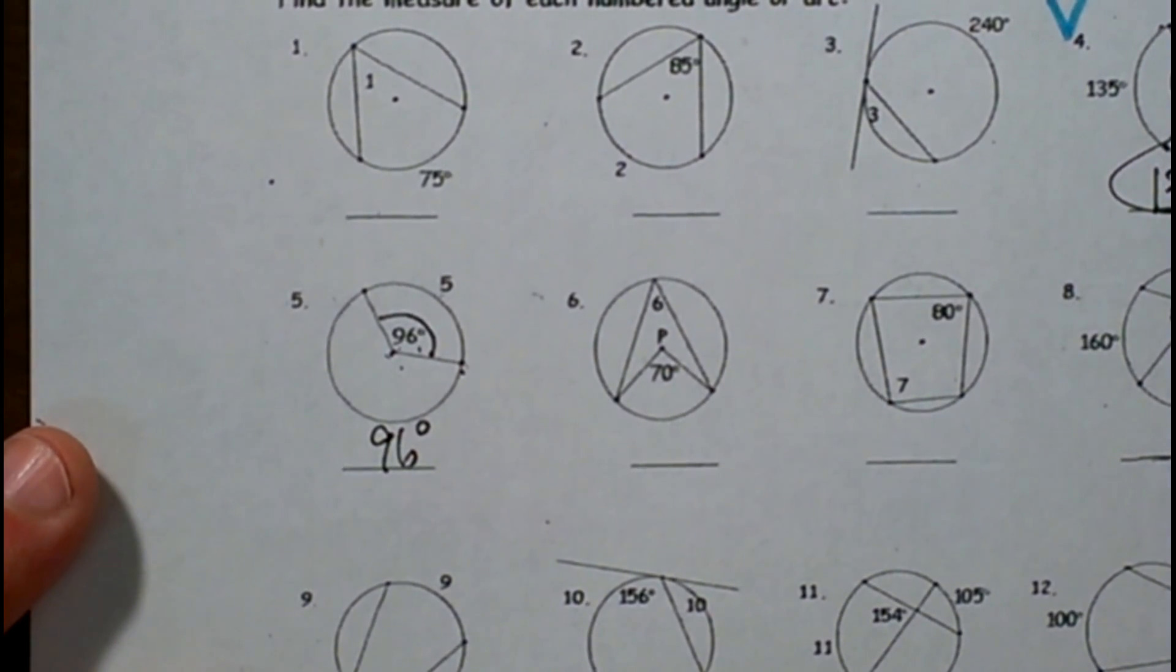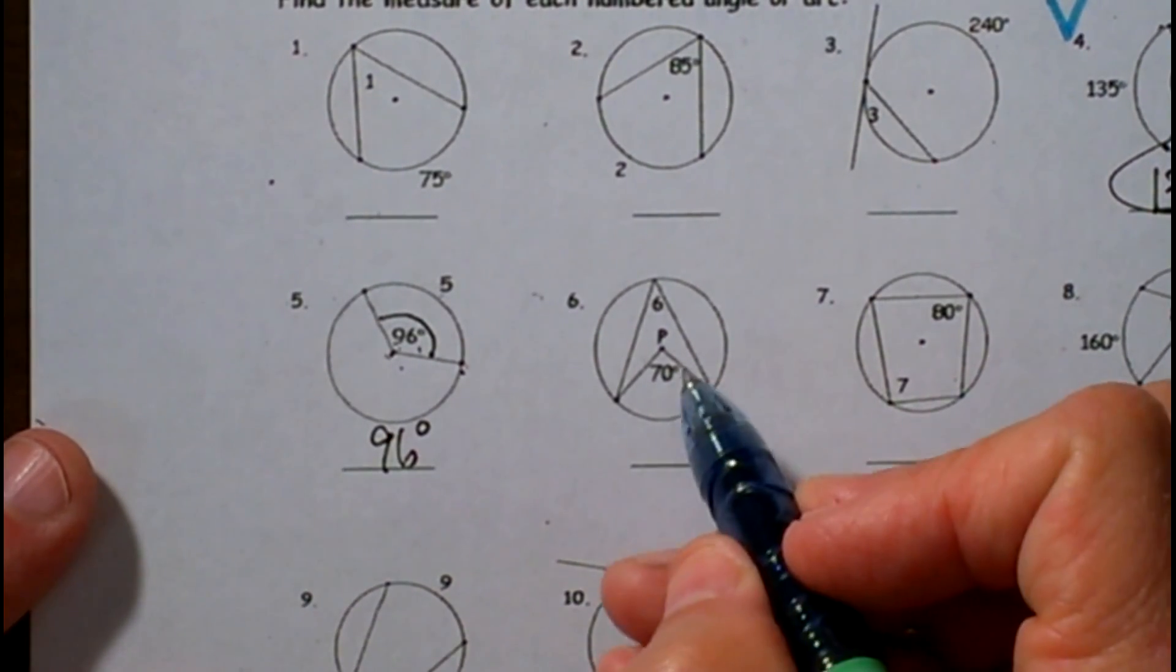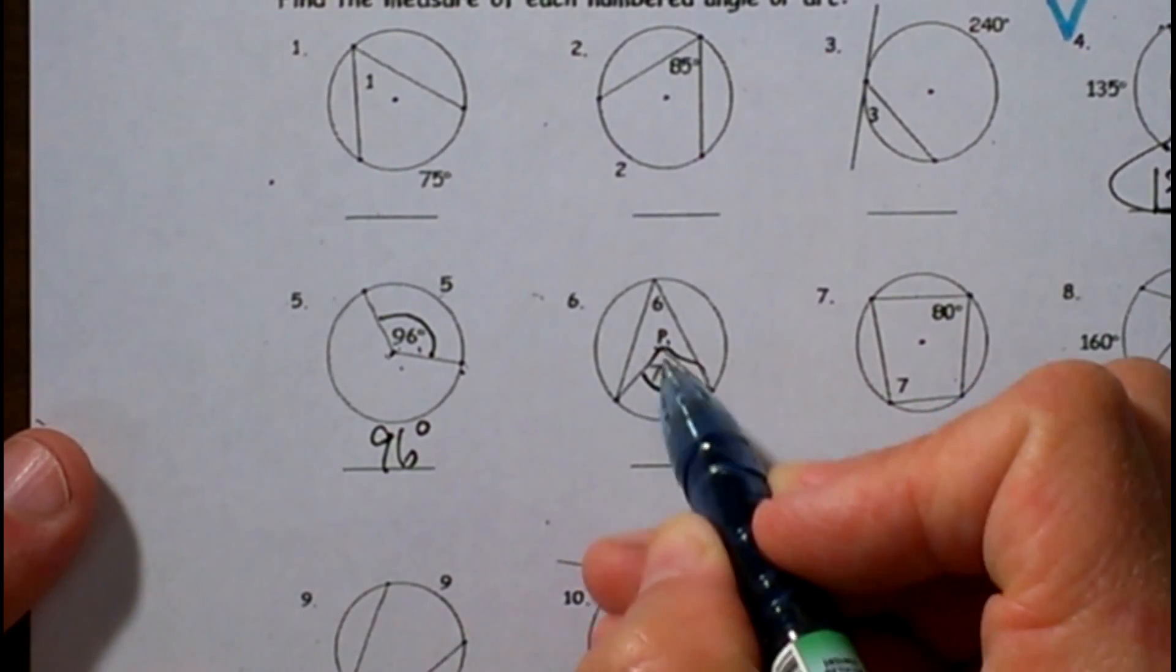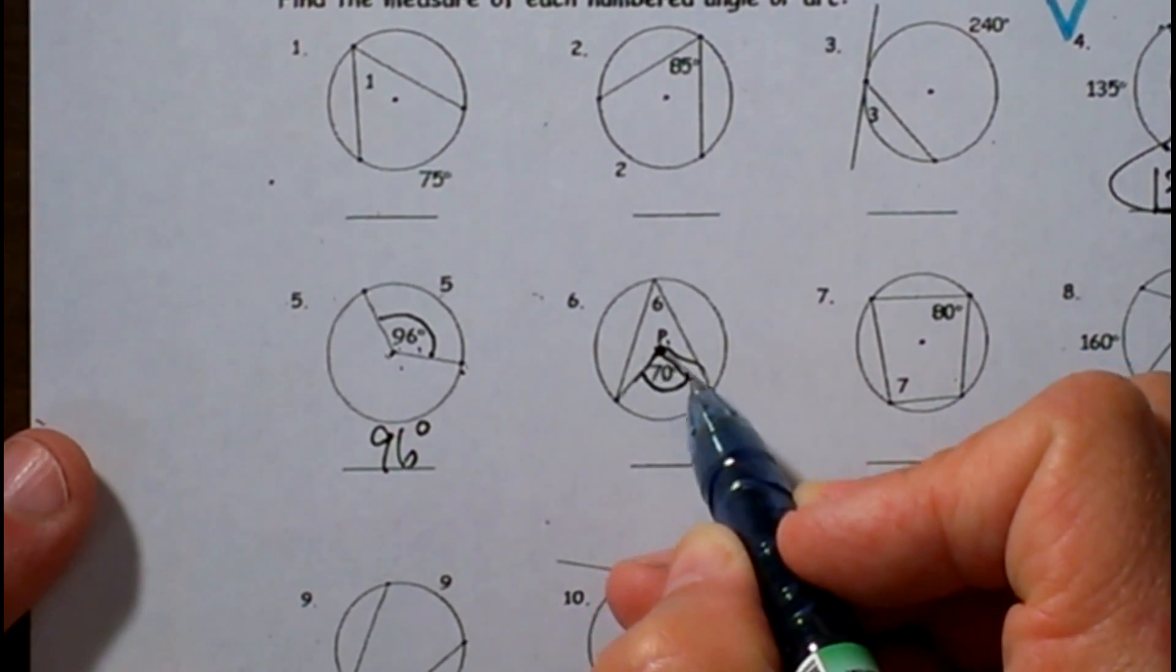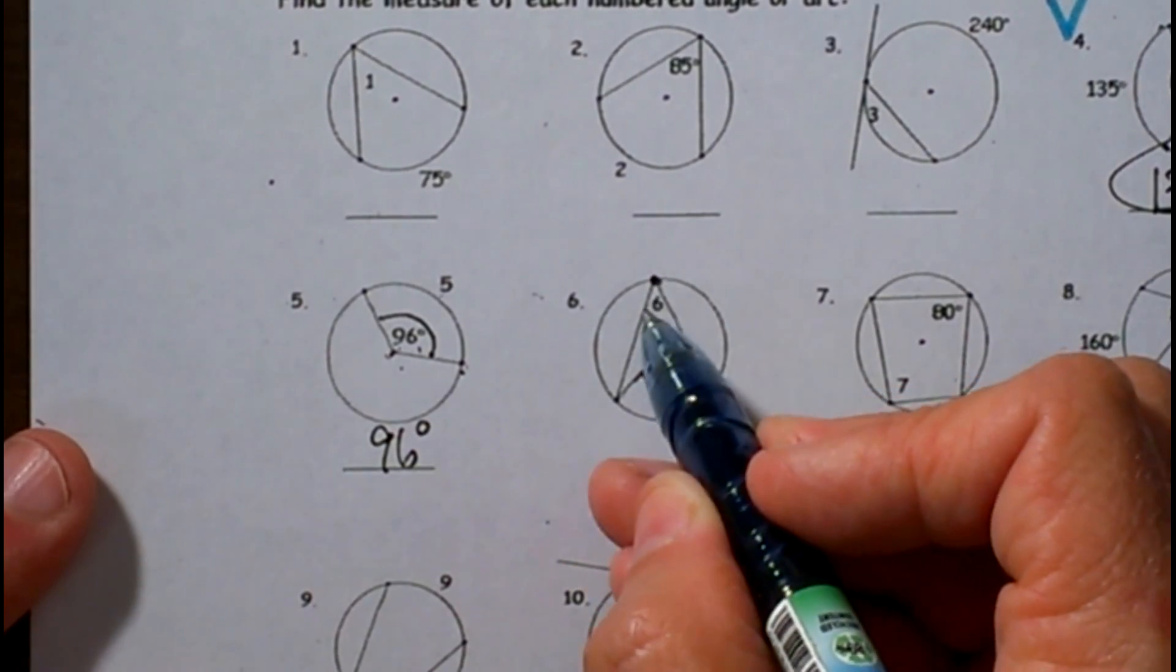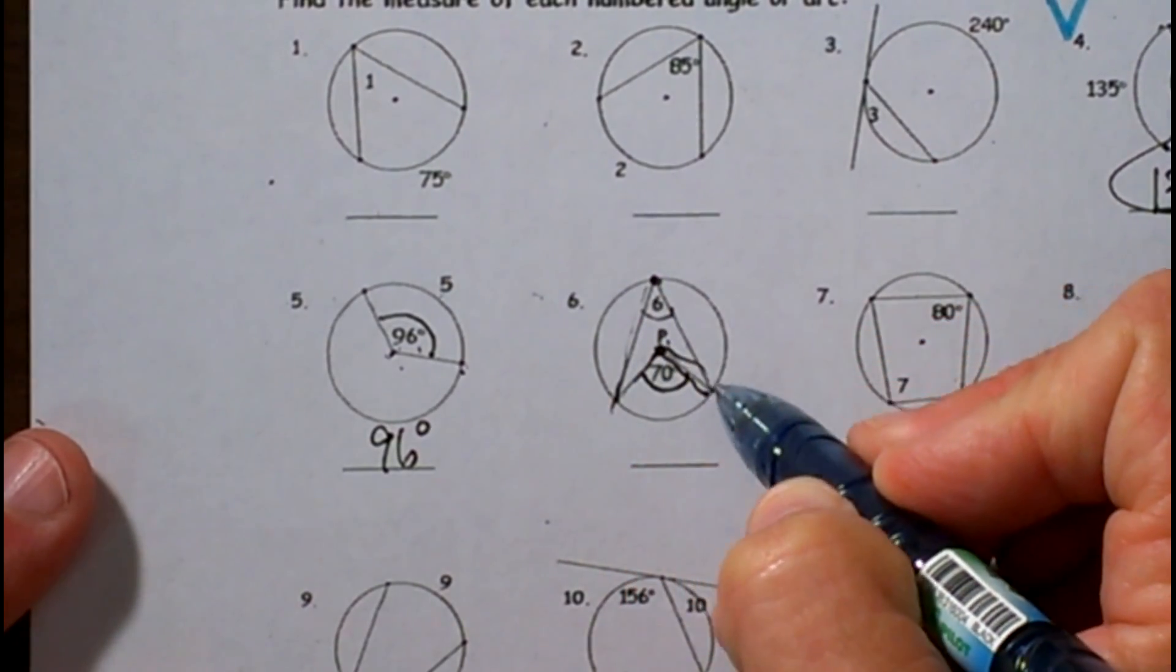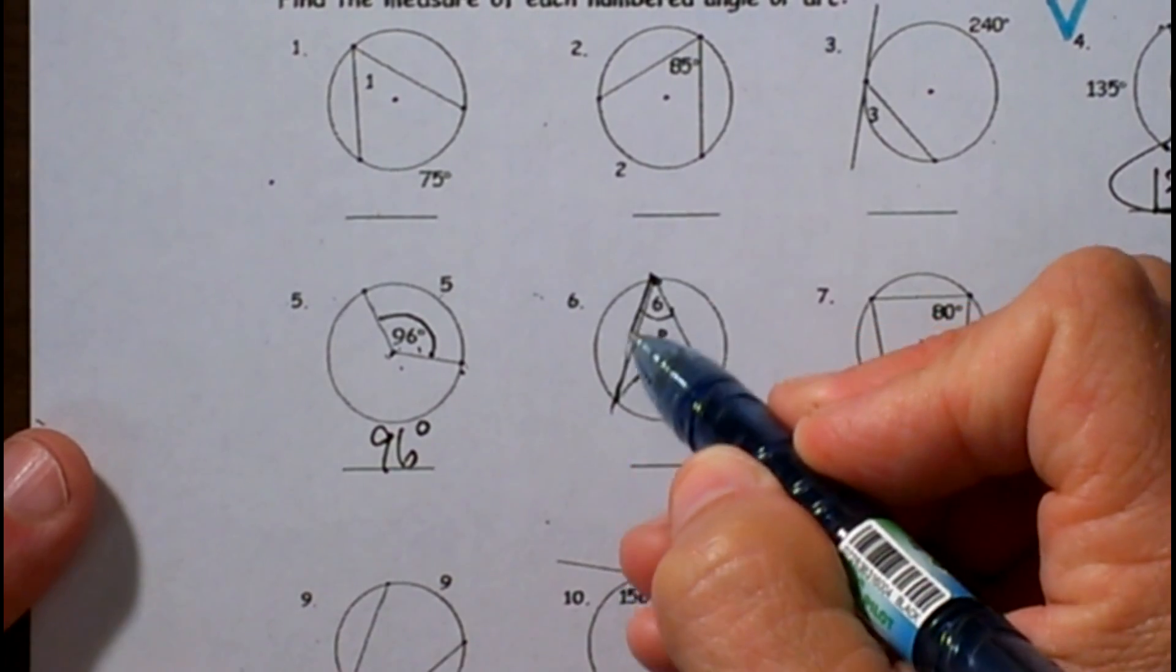Let's move on to number 6. Number 6 is a little different. We have a central angle because the vertex is at the center of the circle, and we need to find this angle back here. Well, that's an inscribed angle. Do you see it? It's inscribed because it lies on the circle.